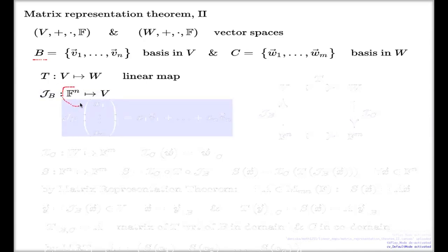In this context it's a basis B and that's a mapping which takes n-tuples of scalars and produces a vector in the vector space V. J sub B applied to an n-tuple (x₁, ..., xₙ) gives the linear combination of elements of the basis with these coefficients. This is a linear map.